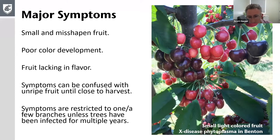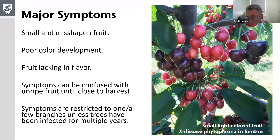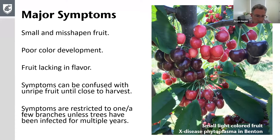The basic symptoms caused by both pathogens include smaller, misshapen fruits — much smaller than normal. Often the shape is lumpy or pointed rather than the nice round cherries you'd expect. Another major thing you might see is poor color development, and if you taste the fruit they may be lacking in flavor, bitter, or tasteless. Importantly, symptoms of either pathogen can be confused with unripe fruit until you are very close to harvest, so differences only become distinct as harvest approaches.